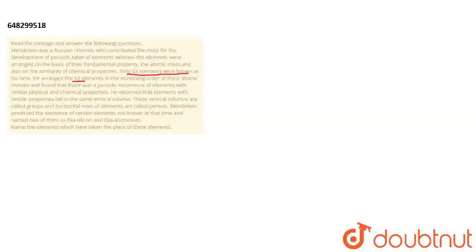He arranged the 63 elements in the order of their atomic masses and found that there was a periodic recurrence of elements with similar physical and chemical properties.